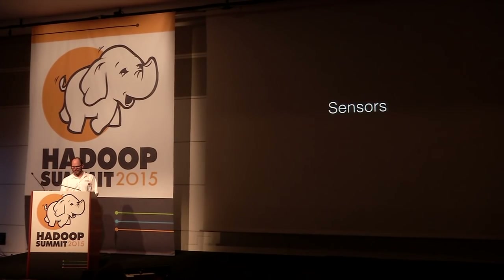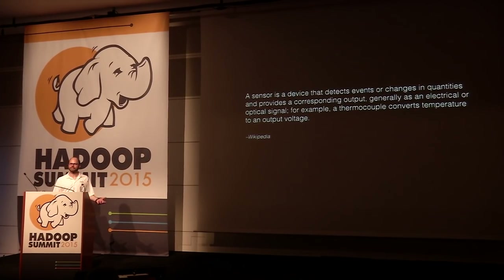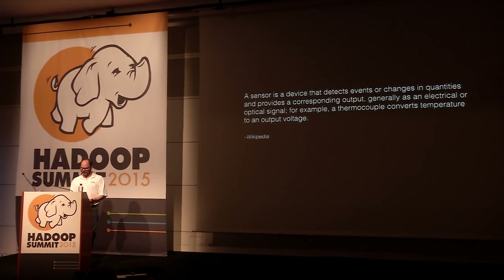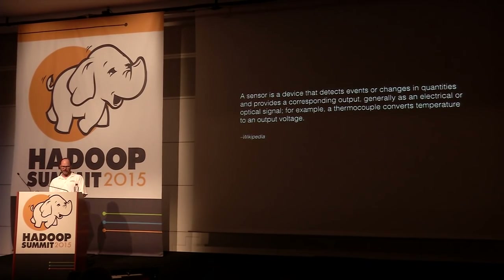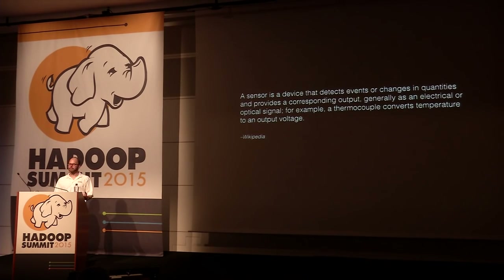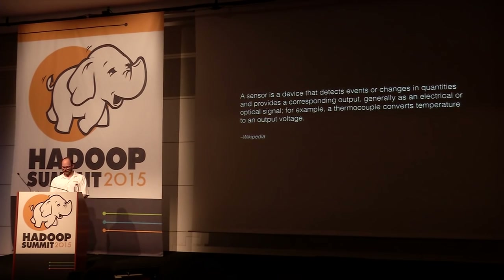So, what is a sensor? Wikipedia has a fairly technical definition, but in other words, a sensor detects properties of the physical environment and converts them into something we can measure. The simplest sensor is a button or switch, which is either pressed or not — on or off — and you can look at the status of that and react to it.